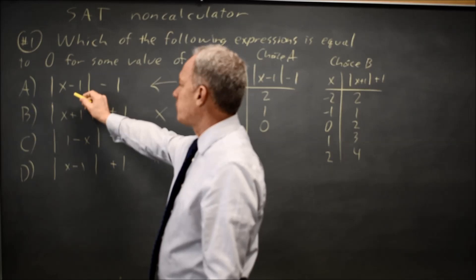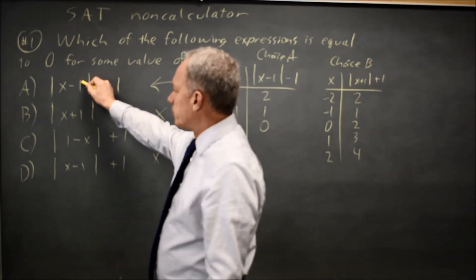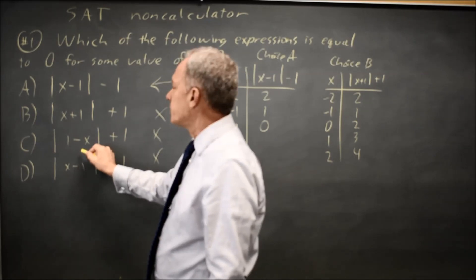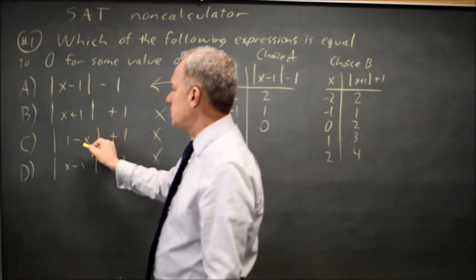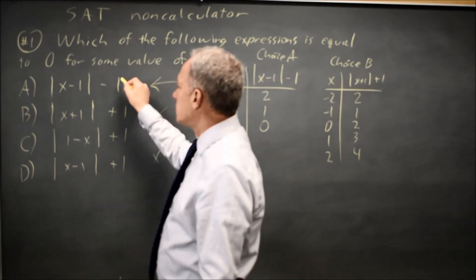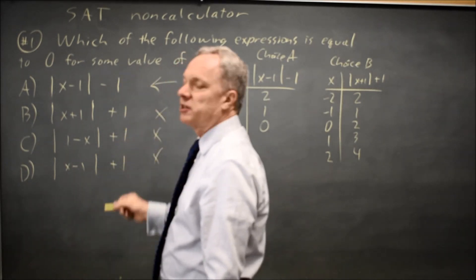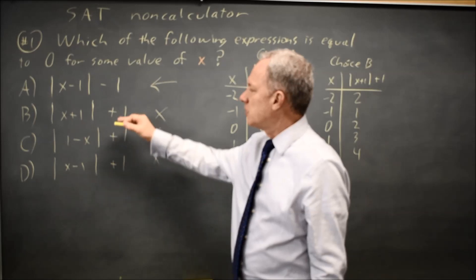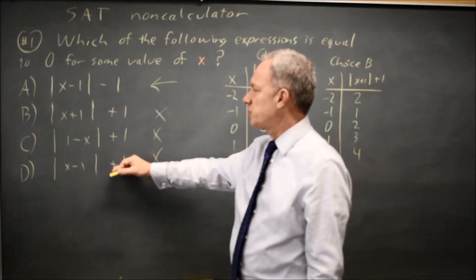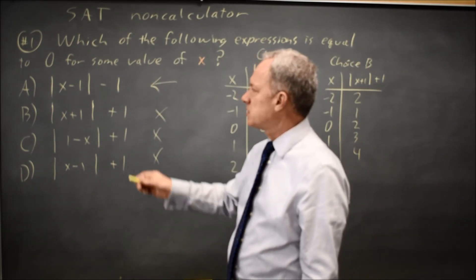Each of these is an absolute value graph. This is shifted to the right by one, this is shifted to the left by one, this is shifted to the right by one. This is reflected over the y-axis and shifted to the right by one. This is shifted down one, these three are shifted up one. What matters is the upward shift of one. When you shift an absolute value graph up by one, it no longer touches the x-axis.